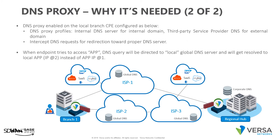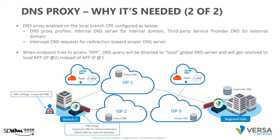Now let's look at the same call flow with DNS split proxy enabled within the branch SD-WAN device. The DNS settings on the end user laptop remain the same, still pointing to the corporate central DNS server using either an explicit proxy configuration or a PAC file. This time, the DNS split proxy enabled on the SD-WAN device allows selecting the most appropriate DNS resolver on a per-FQDN or URL basis, which will result in the selection of the most appropriate server to deliver content and dramatically improve the end user experience.